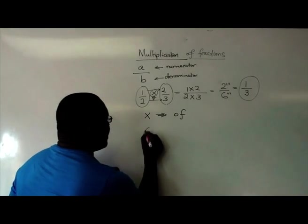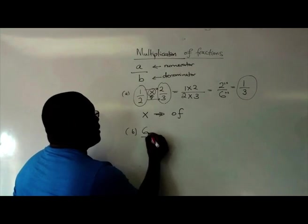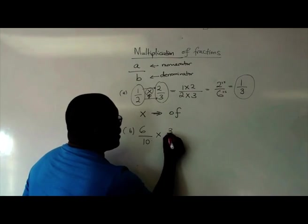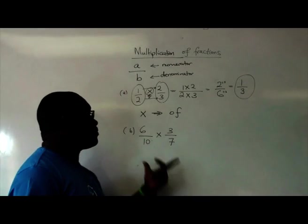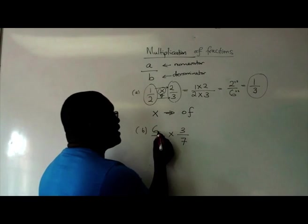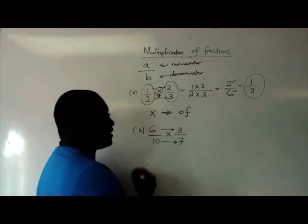Let's try another one. 6 over 10 times 3 over 7. So the rule is very simple. It's a case of saying numerator times numerator, denominator times denominator.